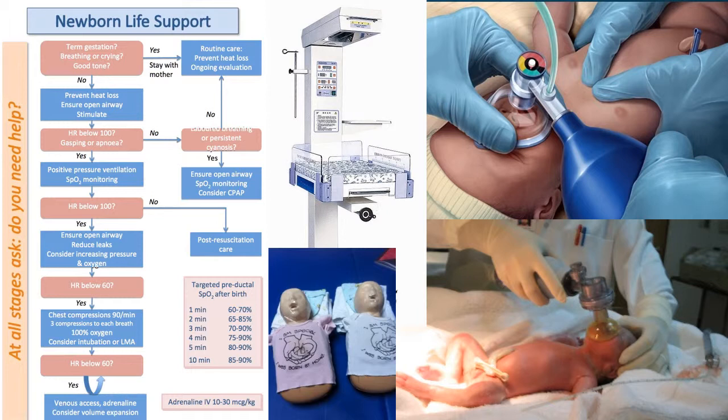Heart rate below 100, gasping or apnoea — yes: positive pressure ventilation, SATs monitoring. Heart rate below 100 — yes: ensure open airway, reduce leaks, consider increasing pressure and oxygen. Heart rate below 60 — yes: chest compressions 90 per minute, three compressions to each breath, 100% oxygen, consider intubation or LMA.